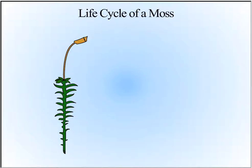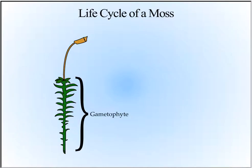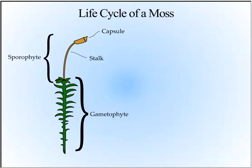The moss is composed of many parts. The spongy green plants that we see covering moist ground are haploid and are called the gametophyte stage. The stalk and the capsule grow out of the leafy gametophyte to produce the diploid sporophyte stage.